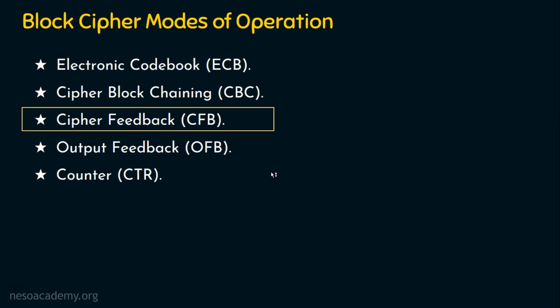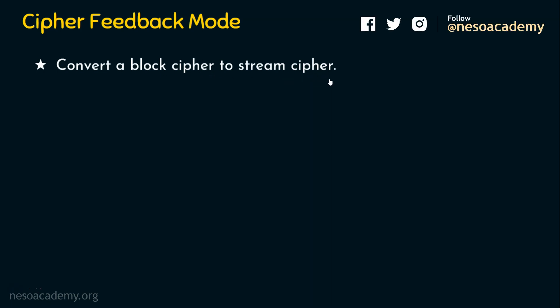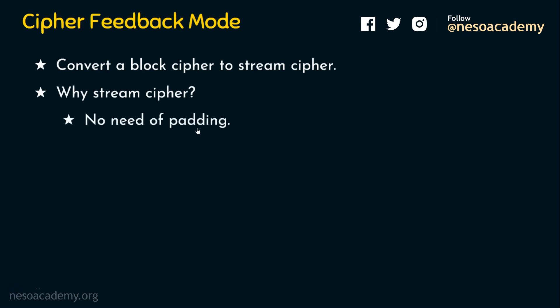The electronic code book ECB and the cipher block chaining CBC worked as a block cipher itself. Whereas here in CFB, we are going to use the block cipher concept, but the mode of operation is going to be a stream mode. The entire block cipher is going to be converted into a stream cipher mode. Stream ciphers are generally fast and there is no need for padding. In a block cipher, if you have fewer bits than the original block size, you need to pad zeros. But for stream cipher, this is not the case.